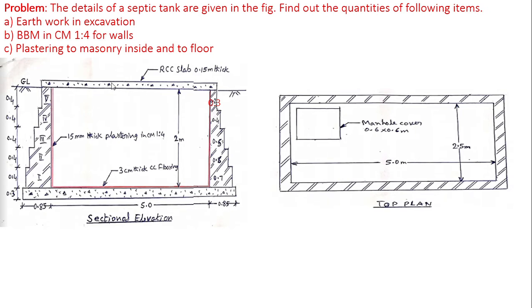The cover of the septic tank is of RCC slab with suitable circular openings with a cast iron manhole for cleaning and inspection. The problem statement is as follows: the details of a septic tank are given in the figure. Find out the quantities of following items: 1) Earthwork in excavation, 2) Burnt brick masonry in CM 1:4 for walls, 3) Plastering to masonry inside and flooring.